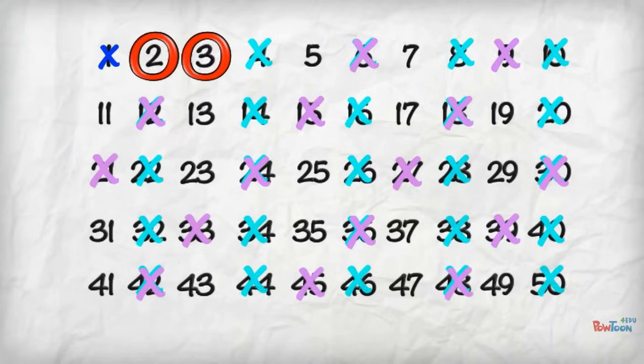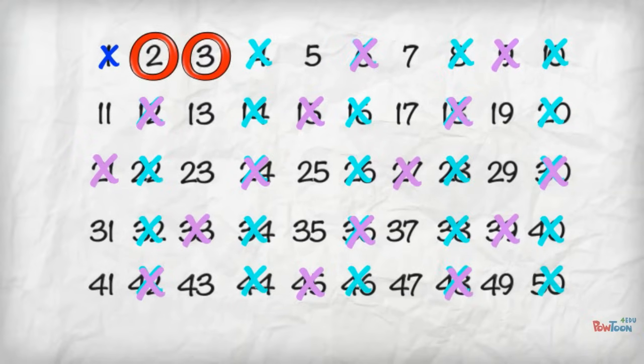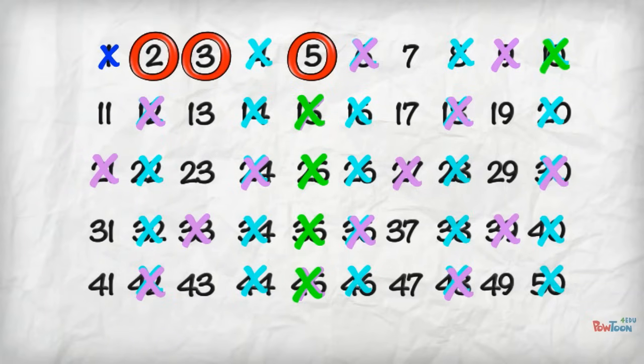I think you're getting the idea now. The next number that hasn't been crossed out is 5. Circle it as a prime number. Get rid of its multiples. Everything ending in a 5 or 0.